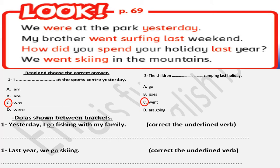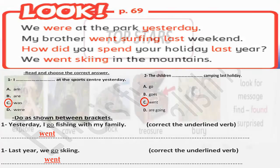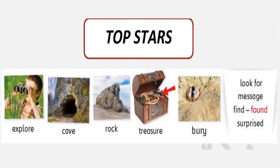Second activity: correct the word in brackets. Number one: 'Yesterday, I go fishing with my family.' This is a very common mistake. Yesterday means past, so it should be 'I went.' Next: 'Last year we go skiing again.' Last year is past — we can't say 'we go skiing last year.' We should say 'We went skiing.'